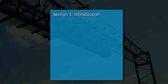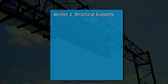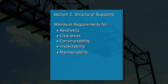Here's a brief overview of each section. Section 1, titled Introduction, provides an overview of the publication, related definitions, and the types of supports covered in the document. Section 2, titled Structural Supports, provides information on the minimum requirements for aesthetics, clearances, constructability, inspectability, and maintainability for structural supports.